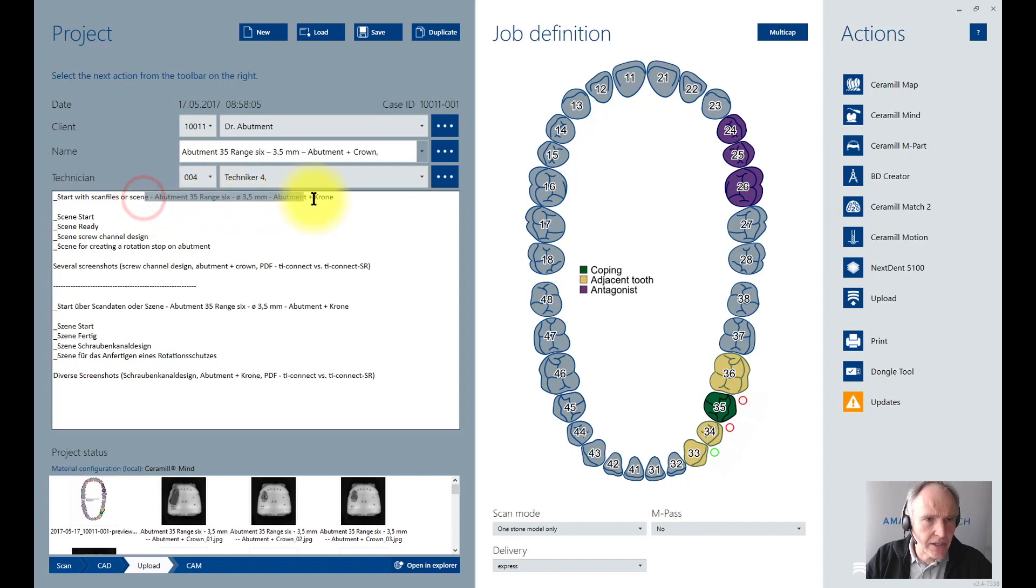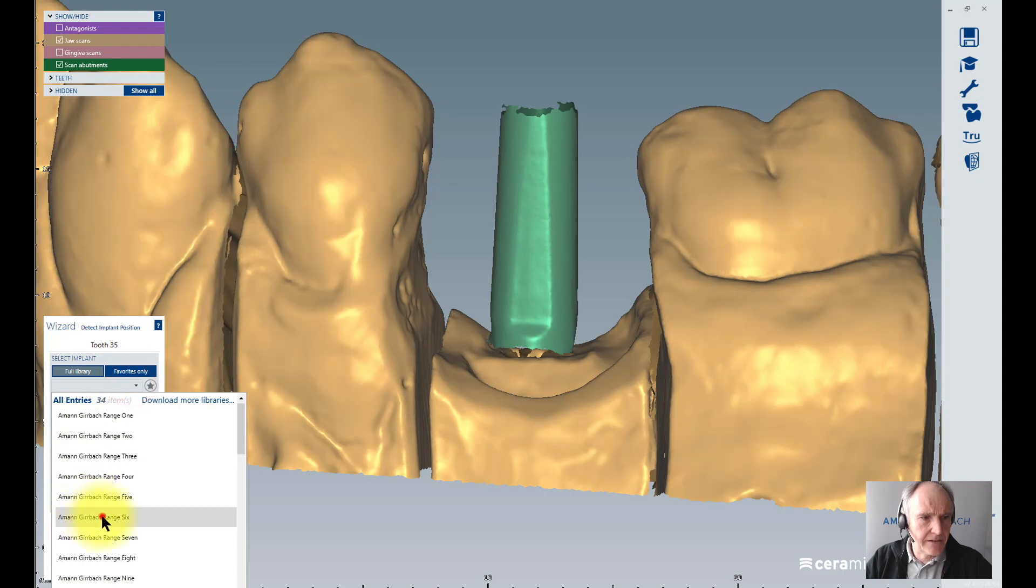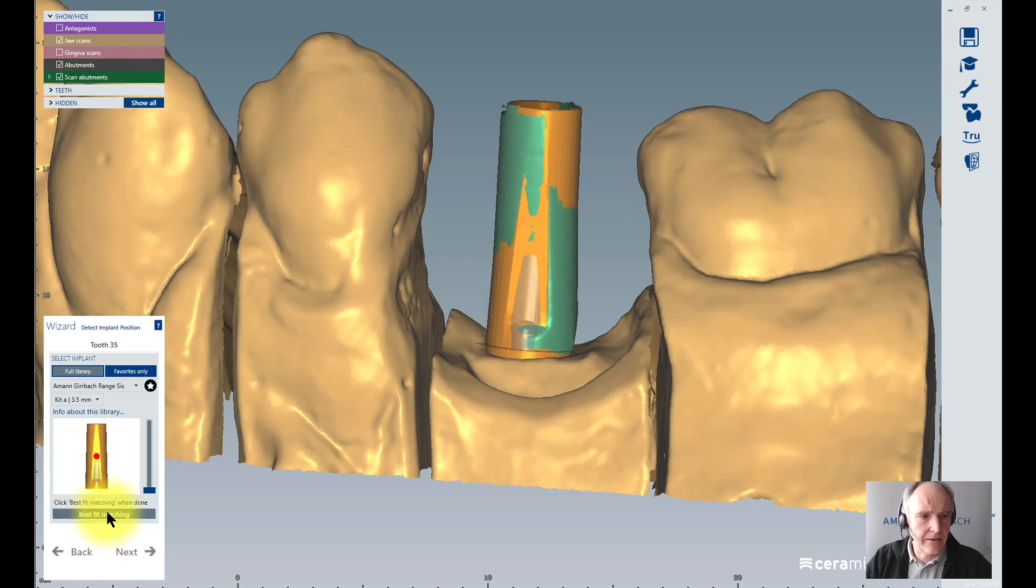After creating my patient's card, I always write down which abutment system I use in the text box. Then I go directly to the construction. In the constructions I load my system of abutment - here it's a range 6 for example and a 3.5 millimeter diameter. Then I click on my scan body and click on best fit matching and continue.